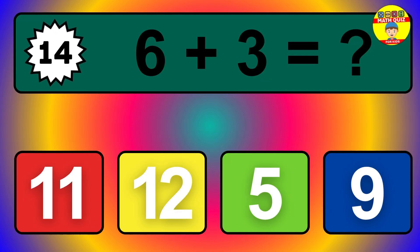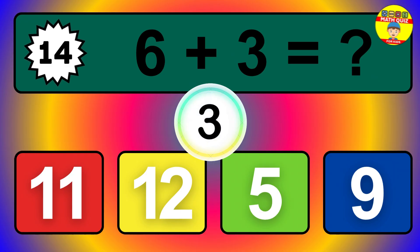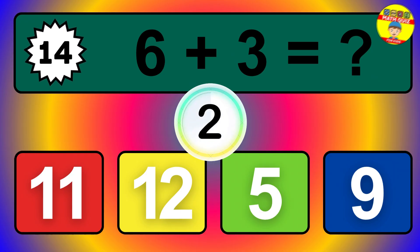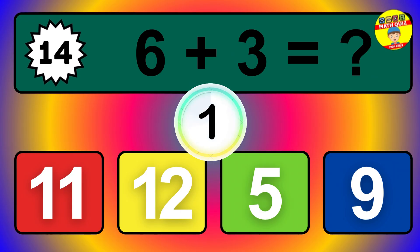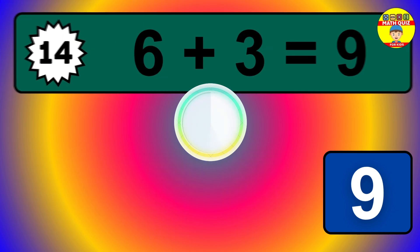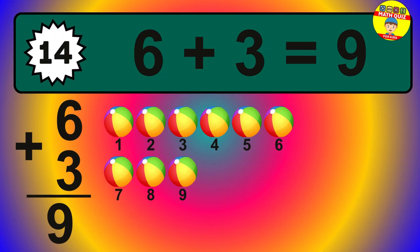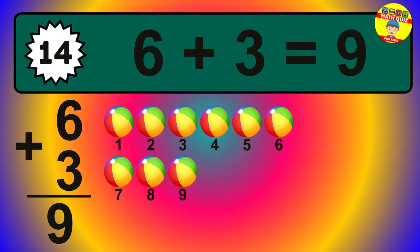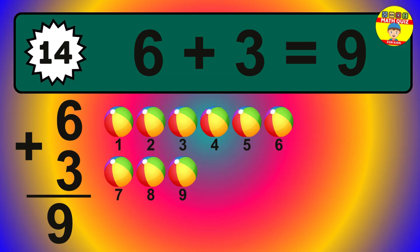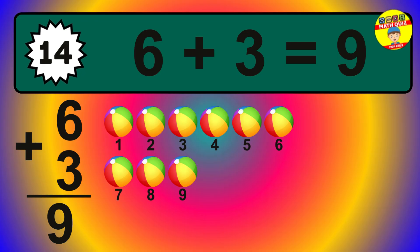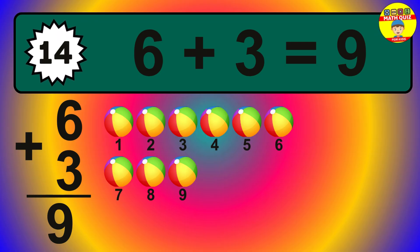Question 14. 6 plus 3 equals what? So the answer is 6 plus 3 is 9. Let's count it: 1, 2, 3, 4, 5, 6, 7, 8, 9.